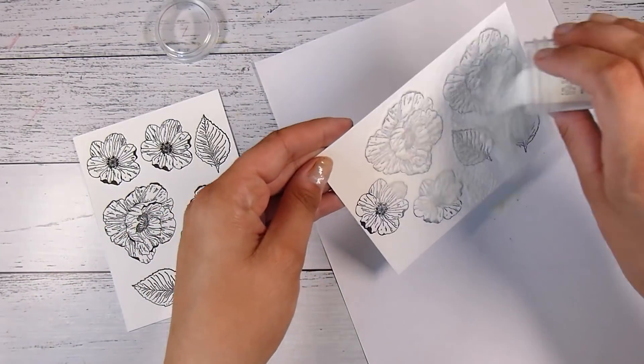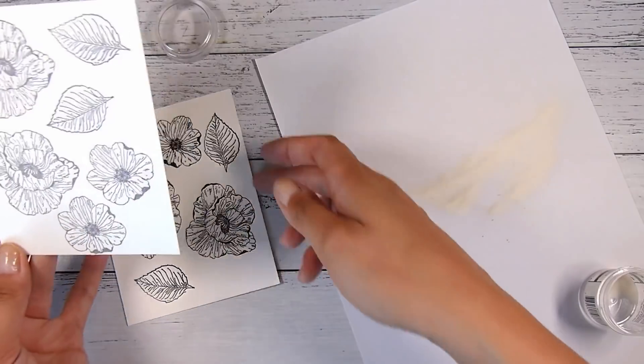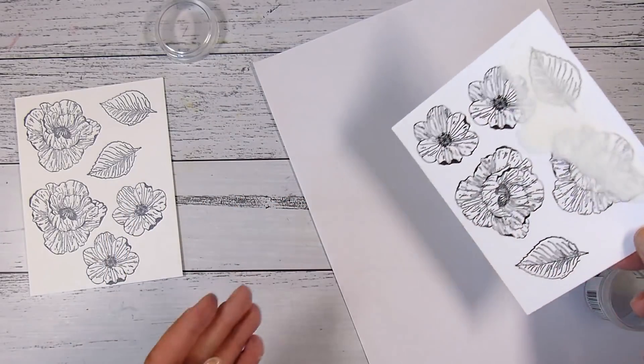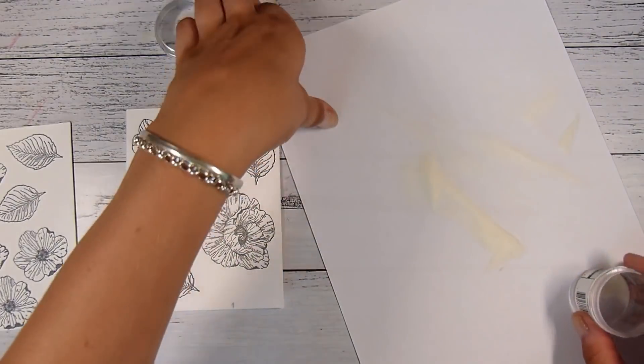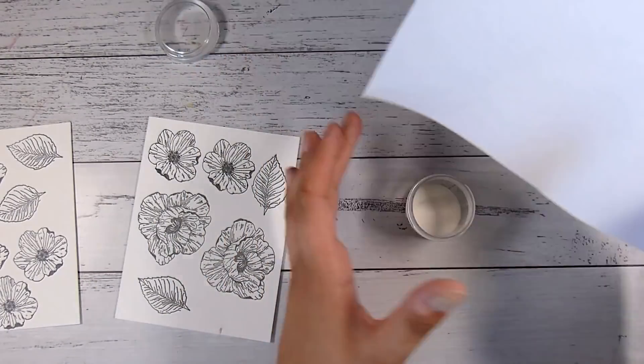Once I'd stamped out a blue panel and a black panel, I'm adding some clear embossing powder over top. Because these are both pigment ink, they are going to smudge really easily.